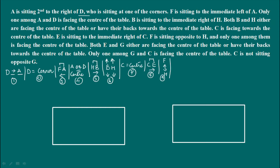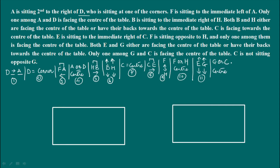Clue 9: F is sitting opposite to H, and only one among them is facing the center of the table. Clue 10: Both E and G are either facing the center of the table or have their backs toward the center. Clue 11: Only one among G and C is facing the center of the table.